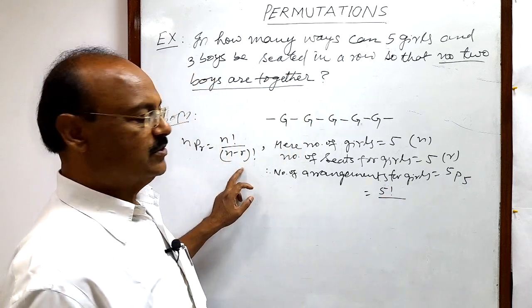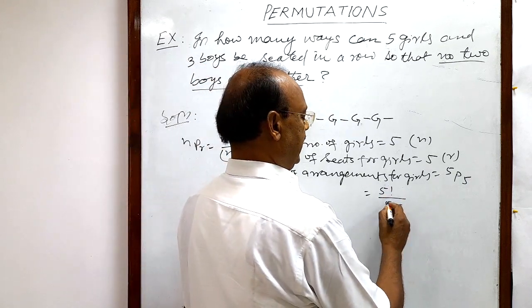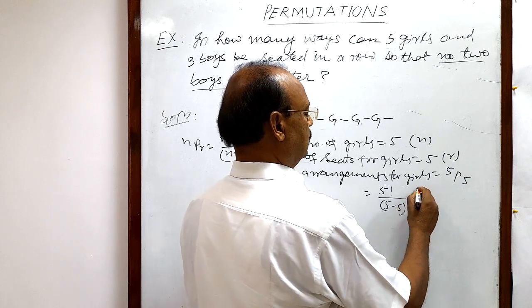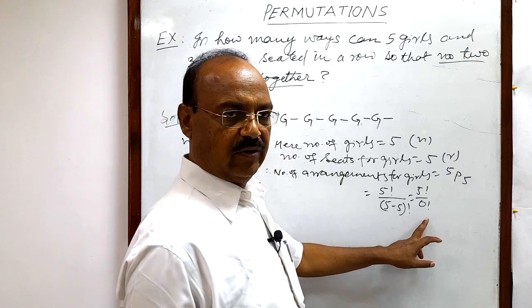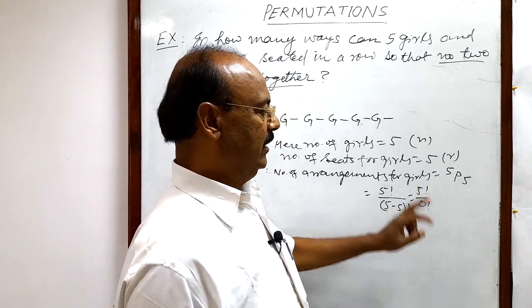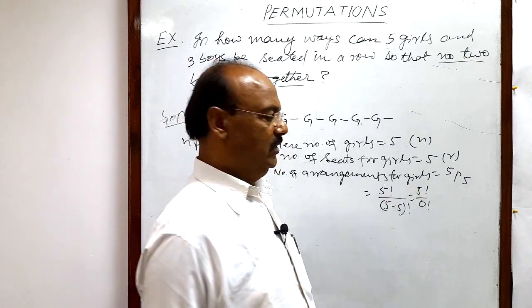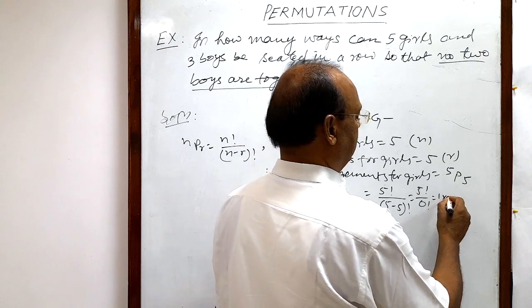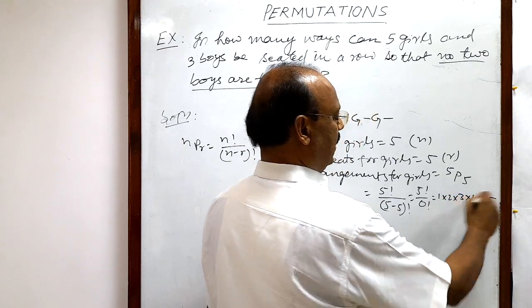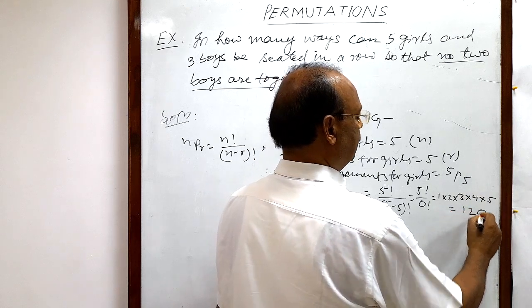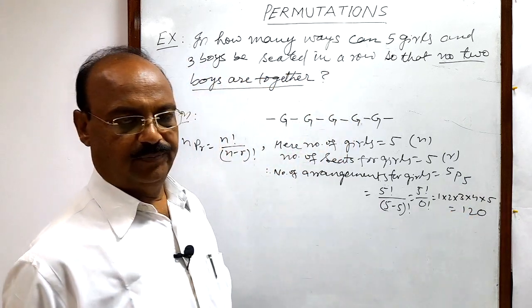Five P five is five factorial by five minus five factorial. So this is five factorial by zero factorial. We know zero factorial is equal to one and five factorial is one into two into three into four into five. After multiplying all these numbers we will be getting 120.